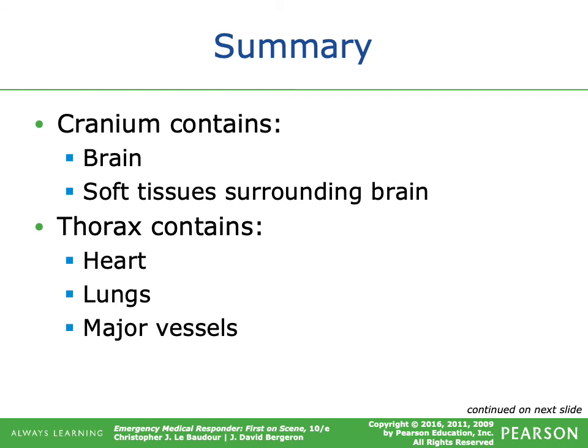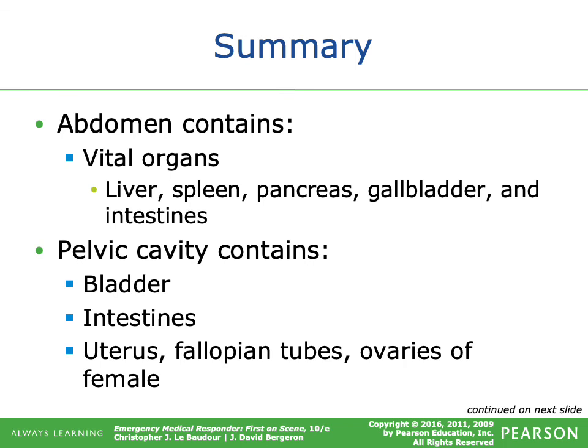The cranium contains the brain and surrounding soft tissues. The thorax contains the heart, lungs, and major vessels. The abdomen contains the vital organs — liver, spleen, pancreas, gallbladder, and intestines. The pelvic cavity contains the bladder, intestines, uterus, fallopian tubes, and ovaries in the female.